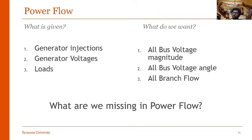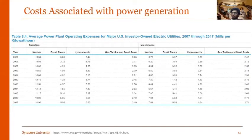However, there's one crucial thing we're missing in power flow analysis. In a practical power system scenario, we have different types of generators—nuclear, fossil fuel, hydroelectric, gas turbine, which are small scale. All of these have different costs of operations and maintenance, as you can see from this table.